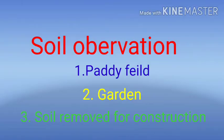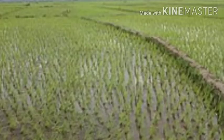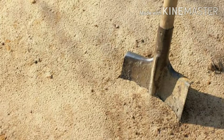First, we will see about soil pollution. For that, we have to observe soil because there are different types of soils around us. For the observation, we have to collect soil from a paddy field and from a garden. In garden soil, the amount of sand will be more in that type of soil.